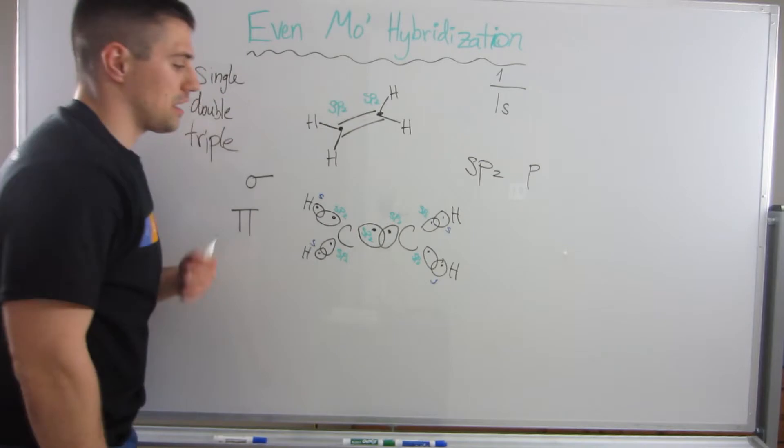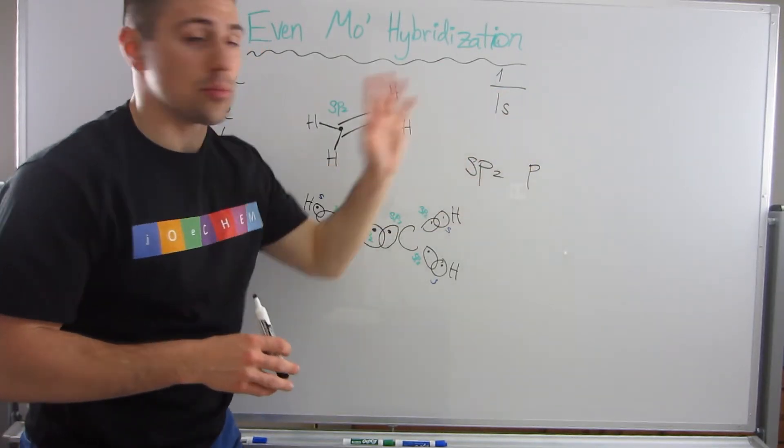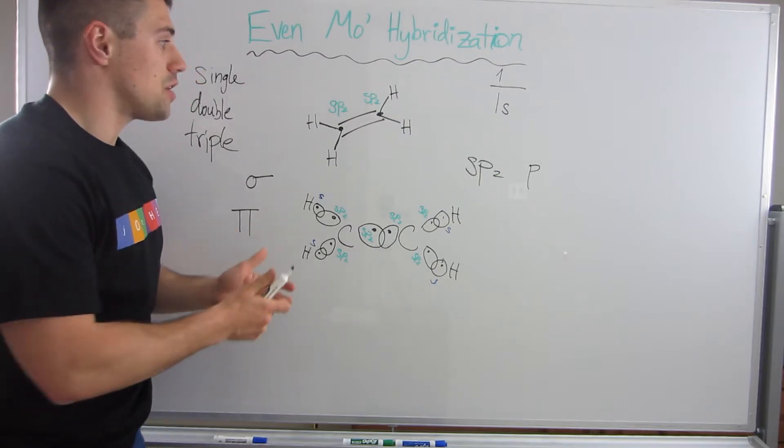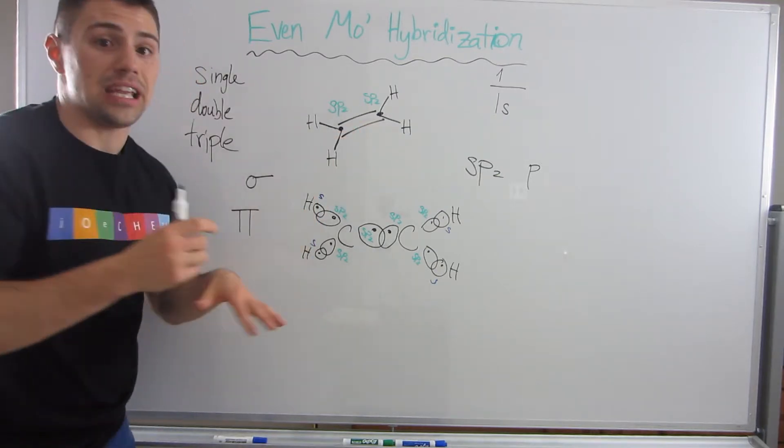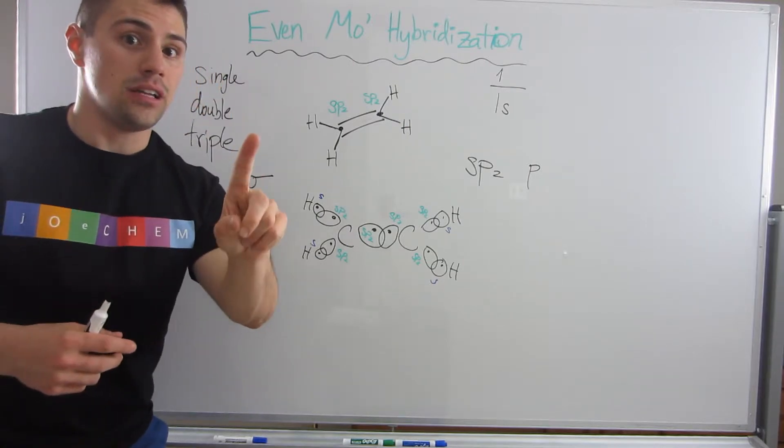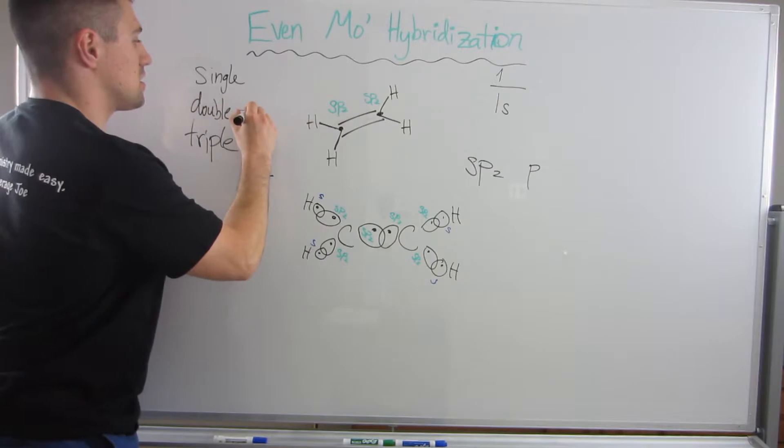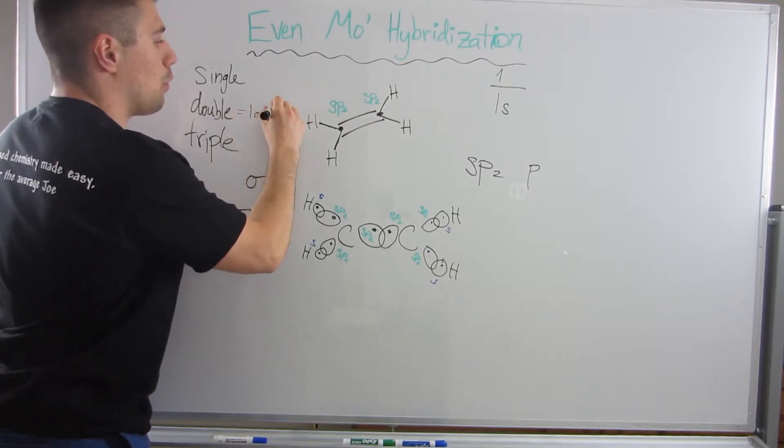Now you're probably thinking, Joe, you still haven't explained what's left over with that p orbital we didn't hybridize. Since this is a double bond, it needs to consist of two bonds. It consists of a sigma and a pi—this double bond is one sigma and one pi.